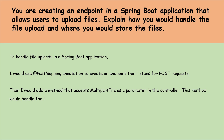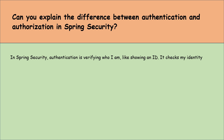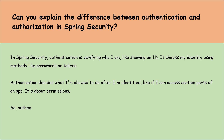Let's move to the next question: can you explain the difference between authentication and authorization in Spring Security? In Spring Security, authentication is verifying who you are — like showing an ID — it checks your identity using methods like passwords or tokens. Authorization decides what you are allowed to do after you are identified, like whether you can access certain parts of an app. So authentication is about confirming identity, and authorization is about access rights based on that identity.